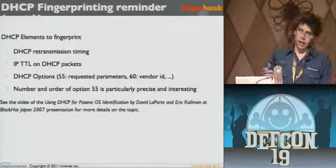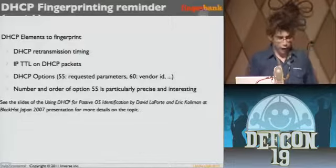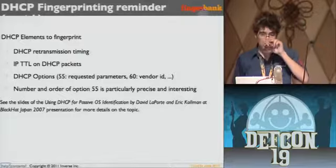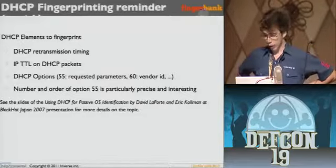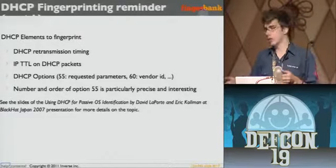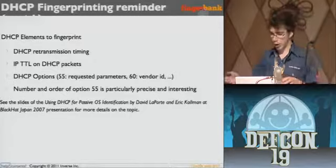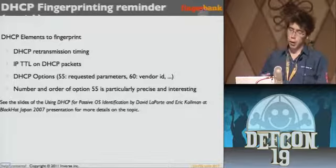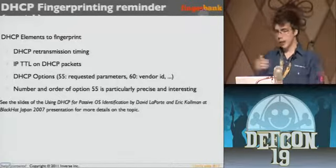What is possible to fingerprint on DHCP? You could focus on retransmission timing, TTL on the packets — but the greatest one, what we've been using for PacketFence, is Option 55, which is the parameter request list. DHCP is kind of a key-value thing: you request a list of options and the server sends you values. Option 55 is really interesting because it includes hostname, domain name, and a lot of other options. There was a Black Hat Japan presentation by Eric Coleman and David Laporte which goes into a lot more detail on the topic.